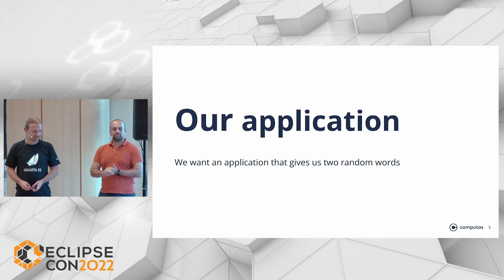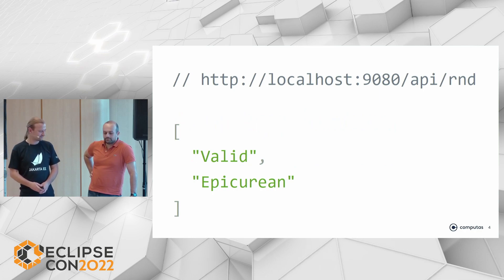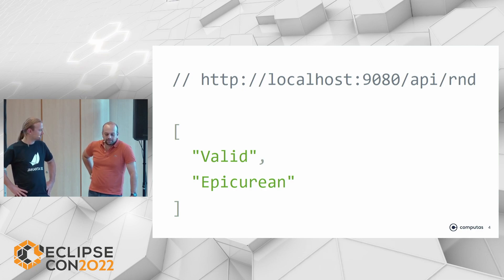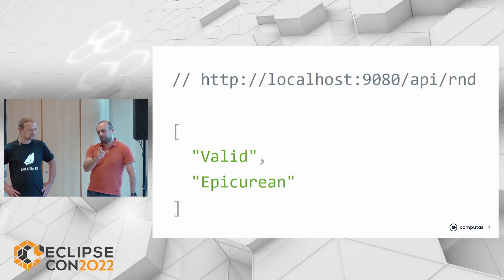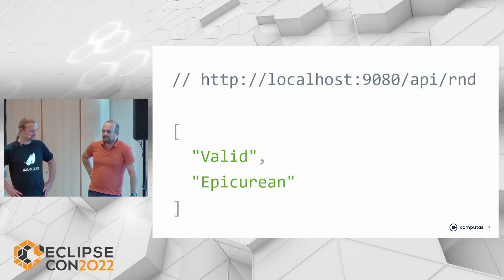Our application is a super, super advanced, very difficult to understand piece of logic — four lines of code. The idea is to return something like this. We just needed to create something. I started with what I called random strings. The idea is it picks one noun and one adjective, puts them together, and returns a random combination.